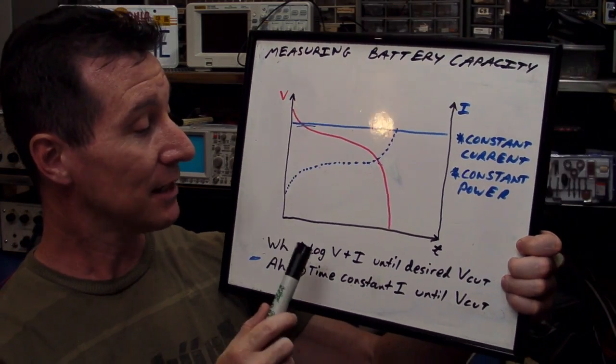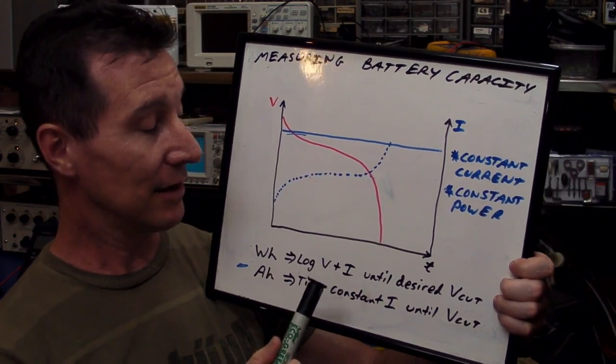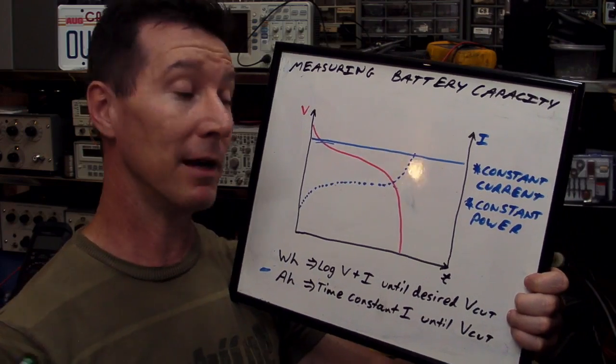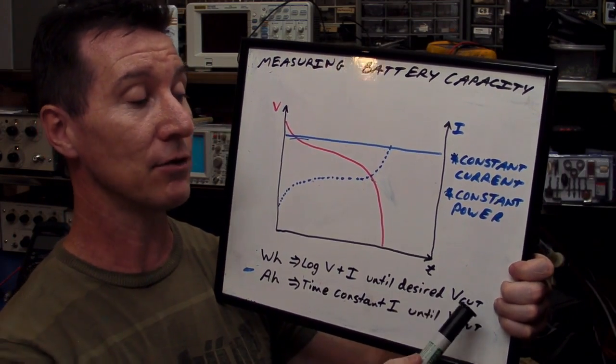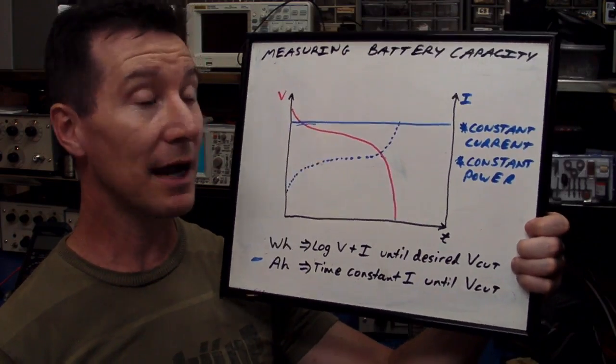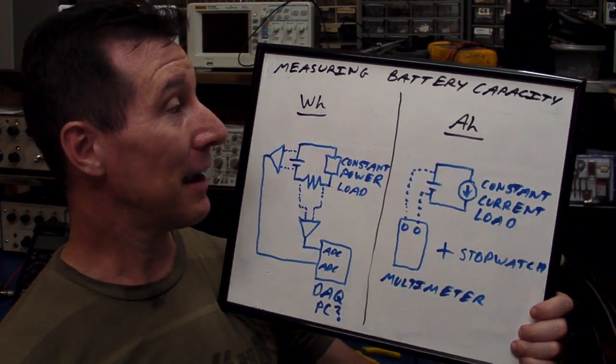But watt-hours, to measure that, you need to log over time. You actually need a data logger, either a PC or a multimeter that can data log, and you've got to measure both the voltage and the current until the desired voltage cut-out point.